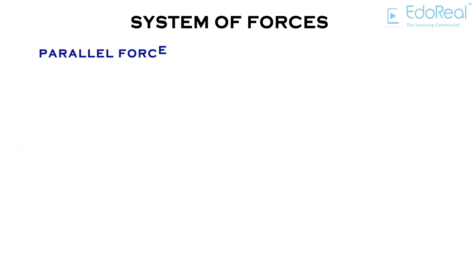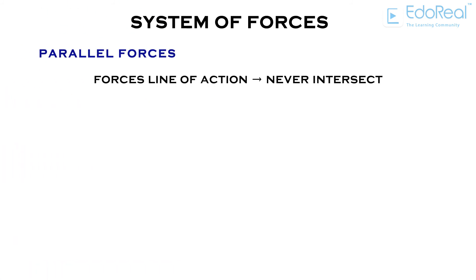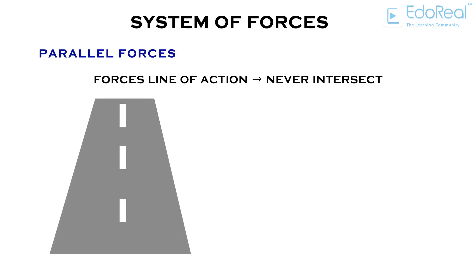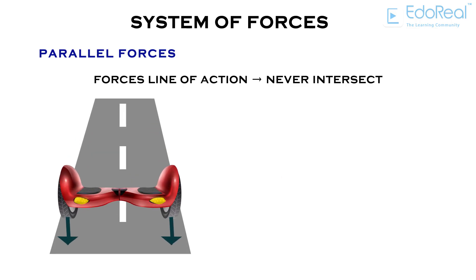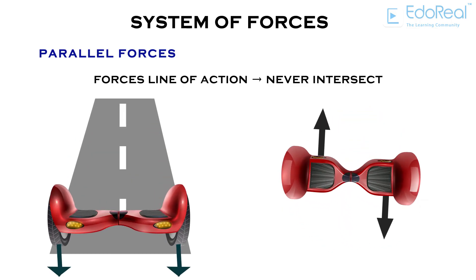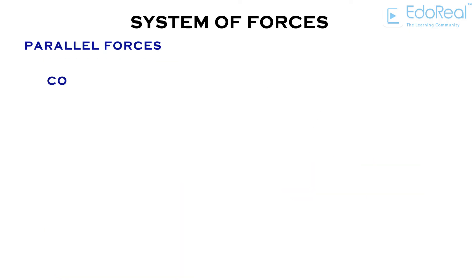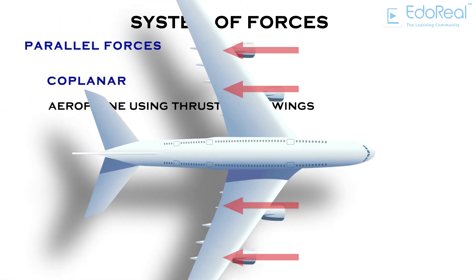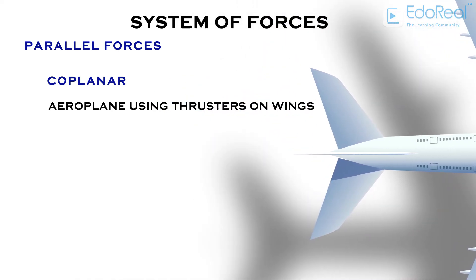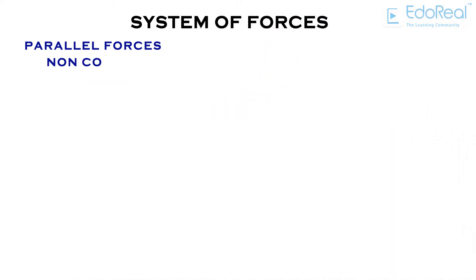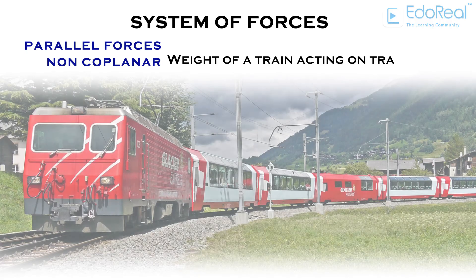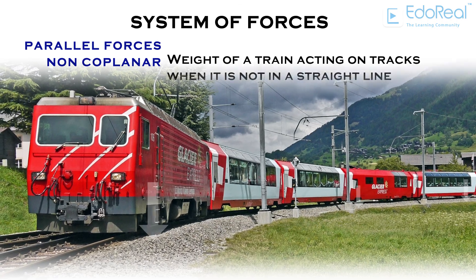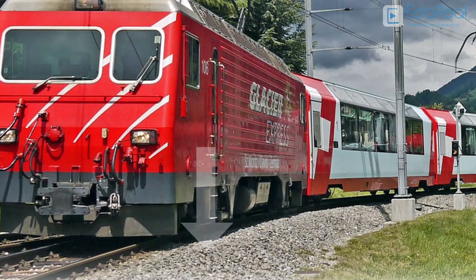Parallel forces: if all the forces have lines of action that never intersect each other, then they are called parallel forces. They can be either in the same direction or in opposite directions. An example of coplanar parallel forces is forces delivered to an aeroplane using thrusters on both wings. An example of non-coplanar parallel forces is the weight of a train acting on tracks when the track is not in a straight line.